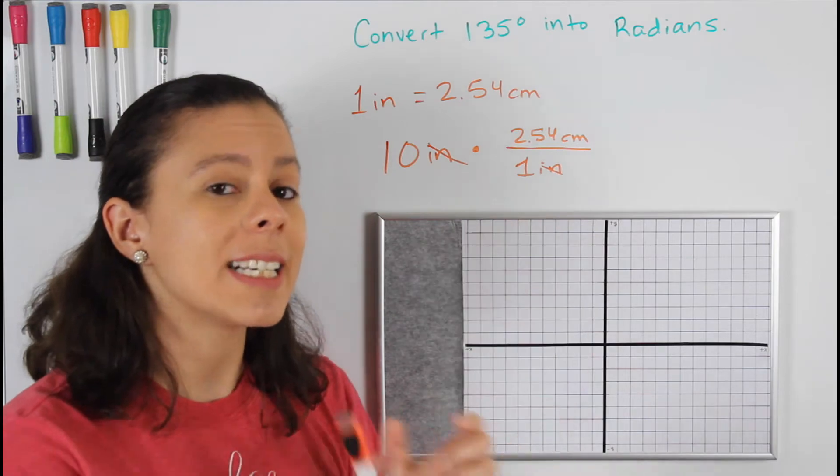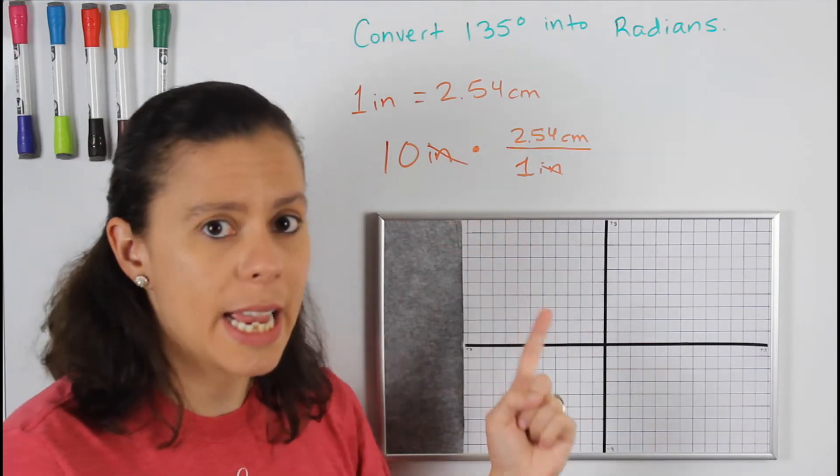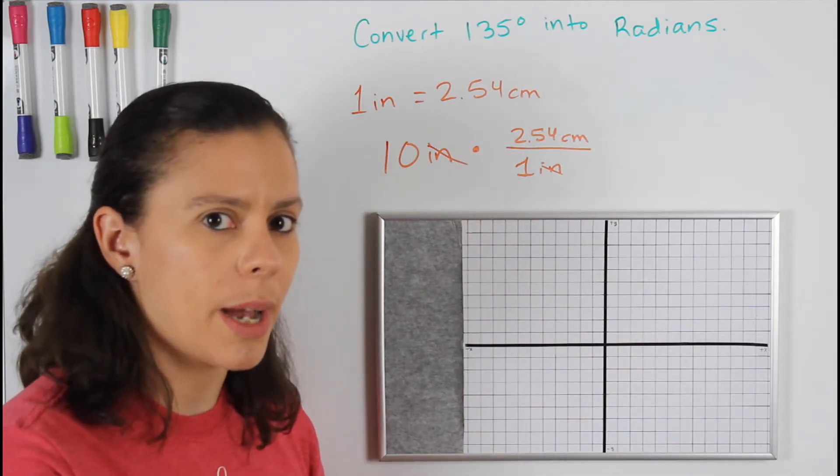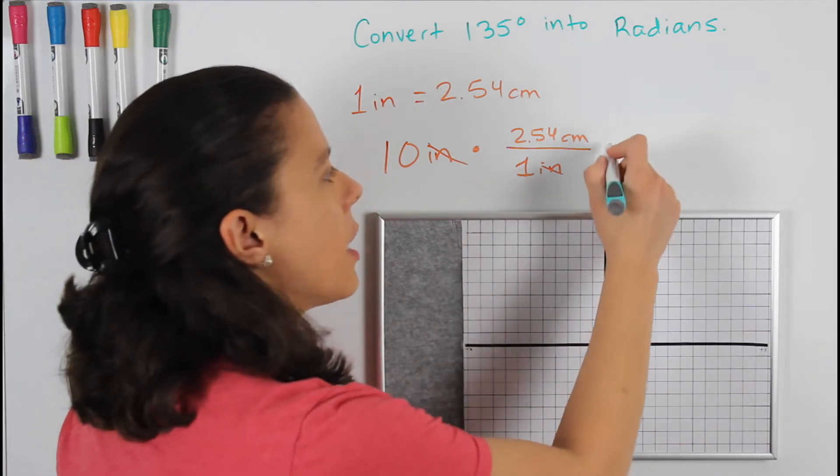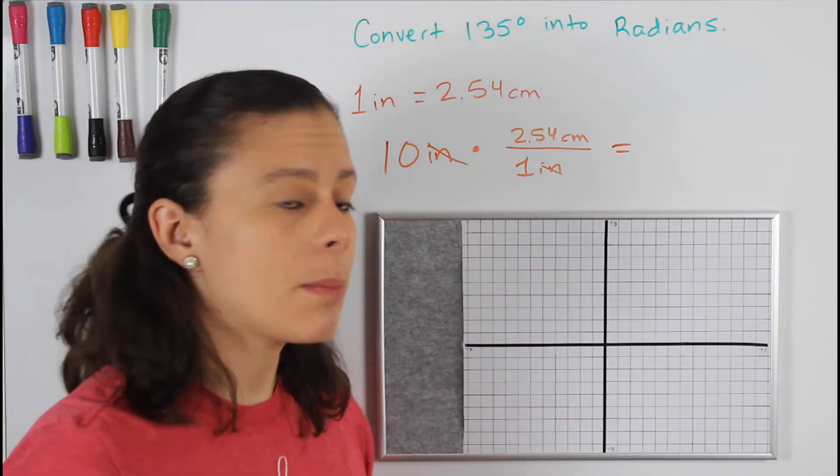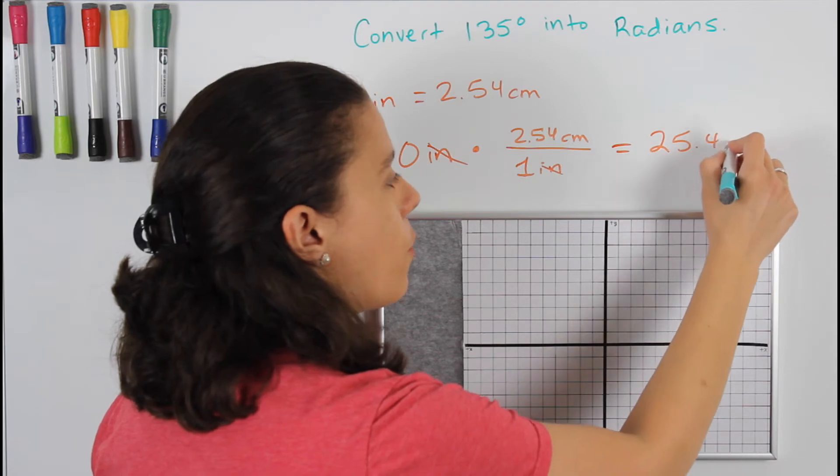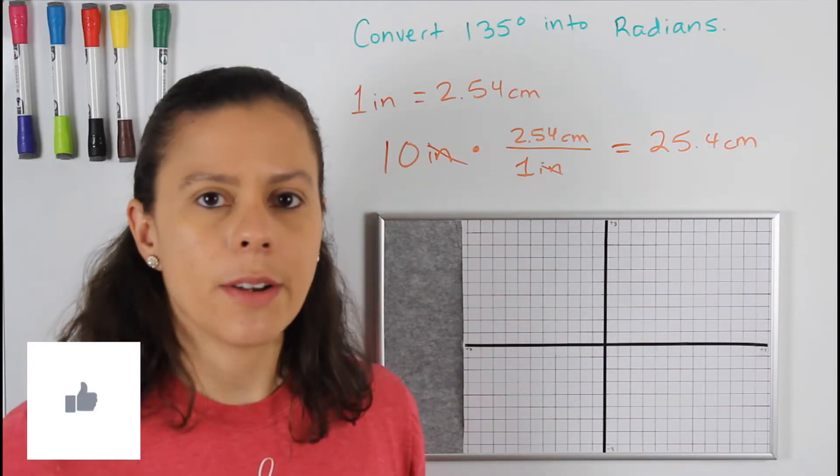2.54 centimeters is the exact same thing as one inch, and that's what you're going to multiply by. So in this example, 10 inches would be the exact same thing as 25.4 centimeters. Very easy.